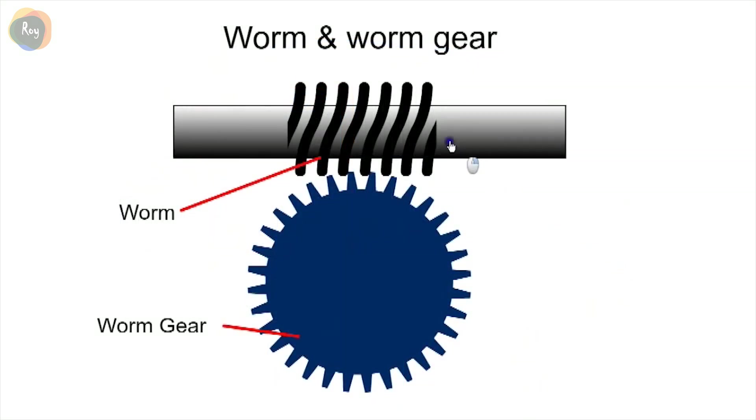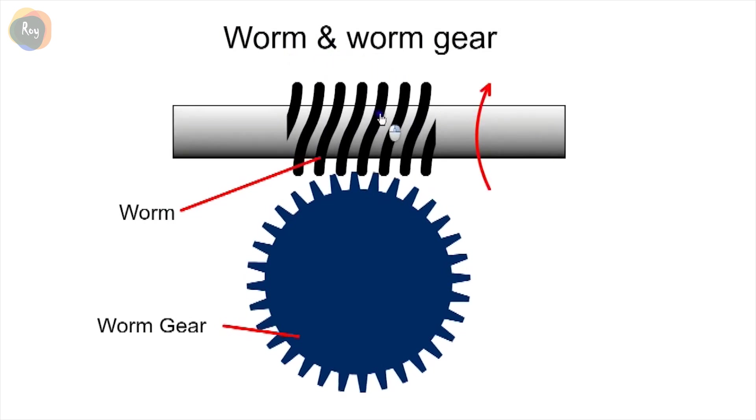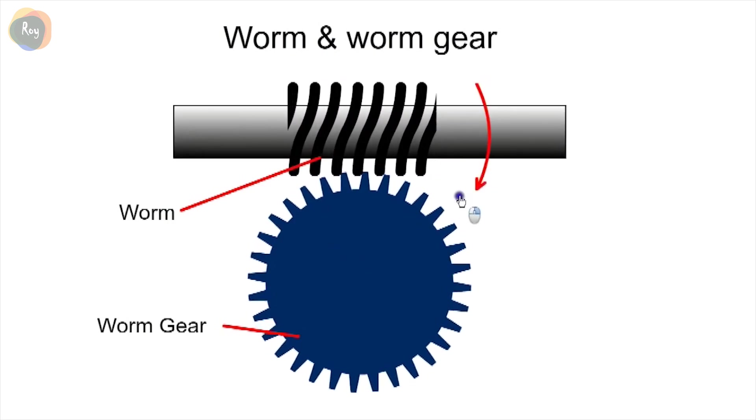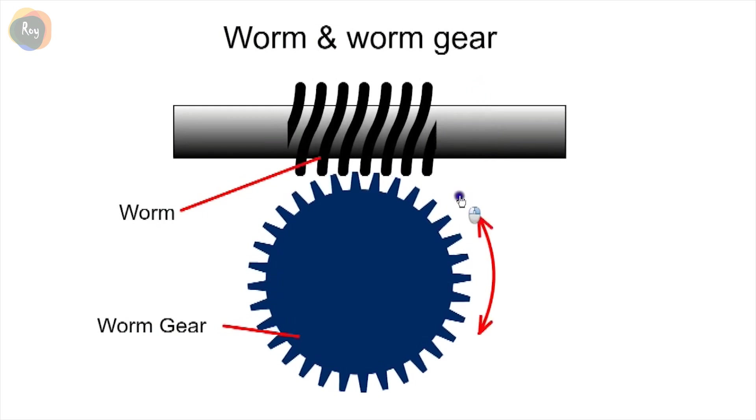The word Torsen is derived from torque sensing. The principle is based on a worm and worm gear. When the worm is rotated, it drives the worm gear, but the gear cannot drive the worm.